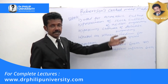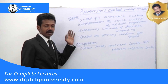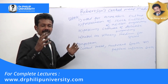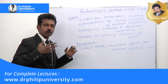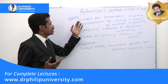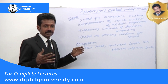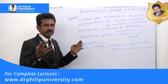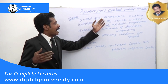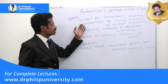We are going to see about Robertson's Cooked Meat Media. First of all, understand that these are culture media which are used to grow cells and microorganisms. Robertson's Cooked Meat Media is used for anaerobic cultures — anaerobic meaning without oxygen, as opposed to aerobic which is with oxygen.